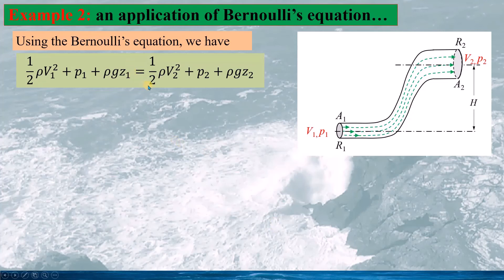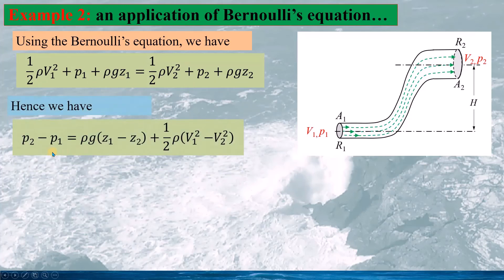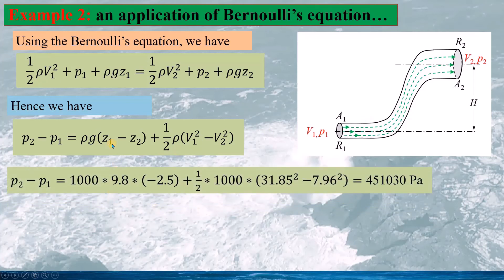Using Bernoulli's equation with the terms at A1 and A2 equaling each other, we calculate P2 minus P1 by substituting the values into the expression. The pressure difference P2 minus P1 is now a positive value of approximately 451 kPa.